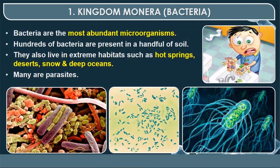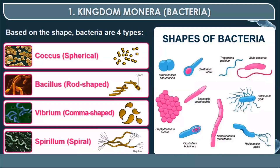Bacteria are the most abundant microorganisms. Hundreds of bacteria are present in a handful of soil. They also live in extreme habitats such as hot springs, deserts, snow and deep oceans. Many are parasitic in nature. On the basis of shape, bacteria are categorized into four types: spherical (coccus), rod-shaped (bacillus), comma-shaped (vibrio), and spiral-shaped (spirillum).